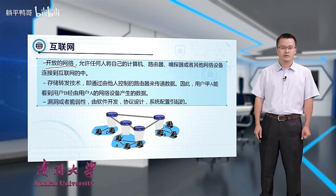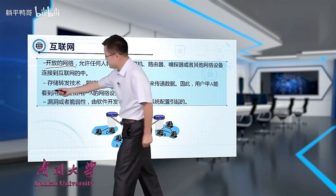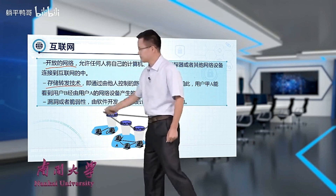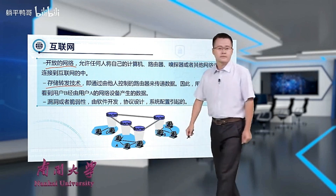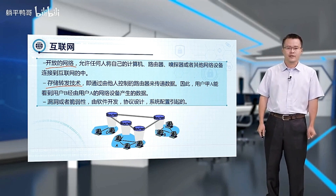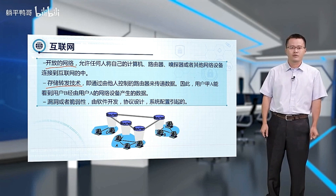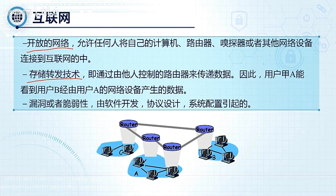The second major reason is store and forward technology. Our internet uses this to transmit data, meaning it passes through routers that others control. Thus, user A can see user B's data passing through A's network device.